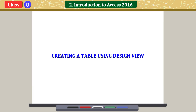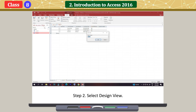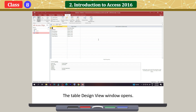Creating a table using Design View: Click on the arrow below the View button — a drop-down menu appears. Select Design View. The Save As window opens, asking you to name the table. Enter the name and click OK. The Table Design View window opens.